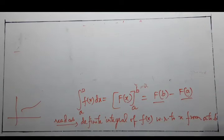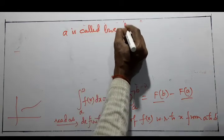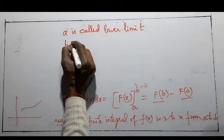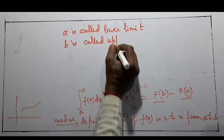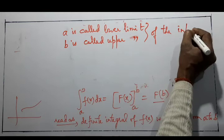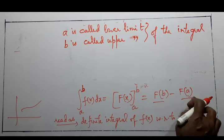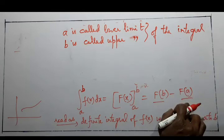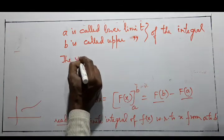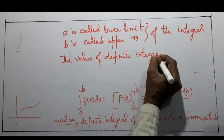A is called the lower limit and B is called the upper limit of the integral. The value of the definite integral is unique — substituting the upper limit b and subtracting the value at lower limit a gives a unique result. Therefore, the value of a definite integral is unique.